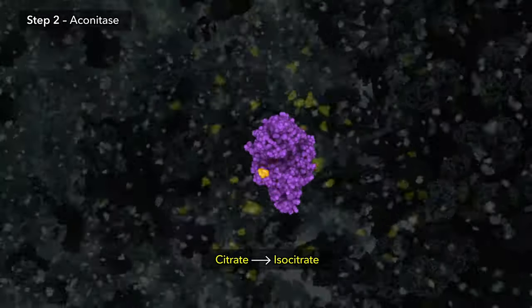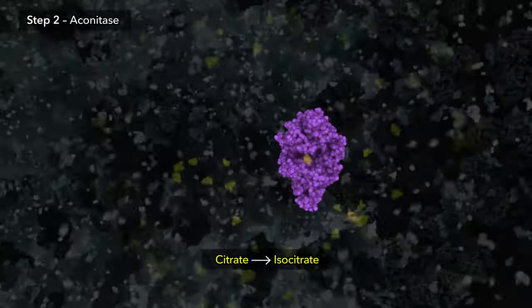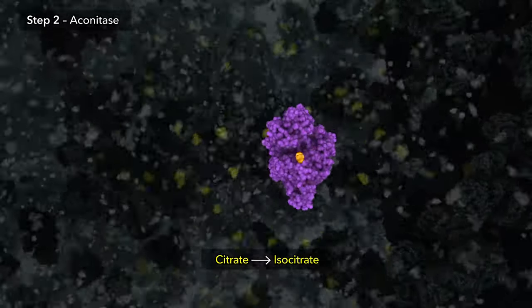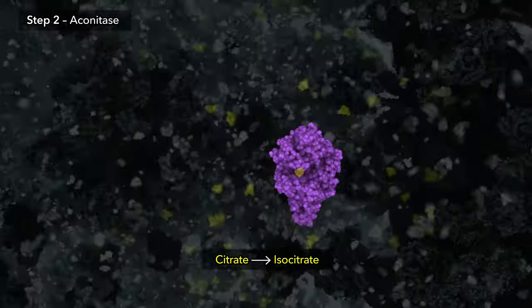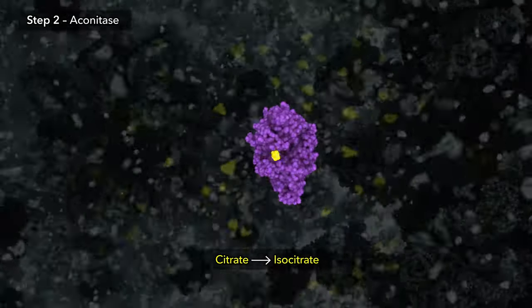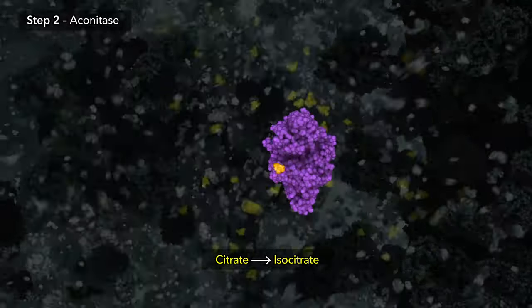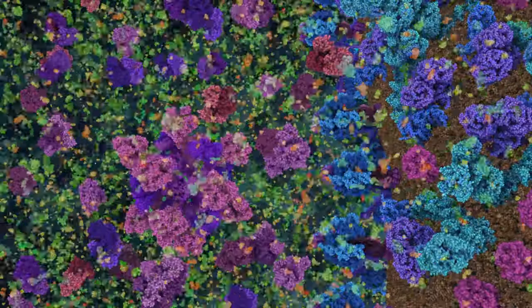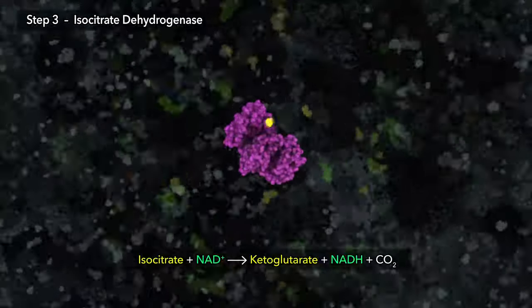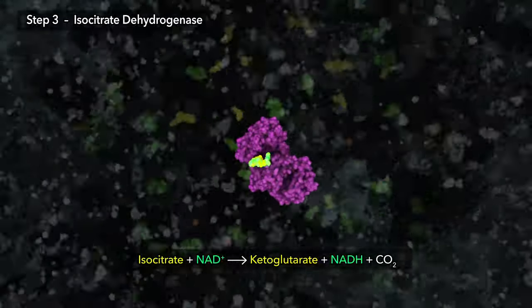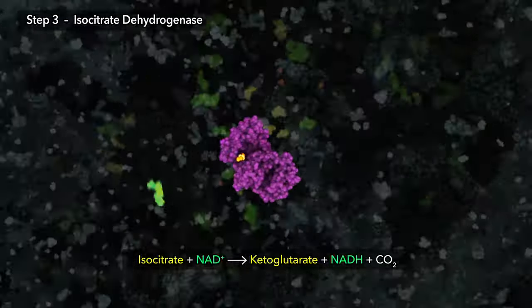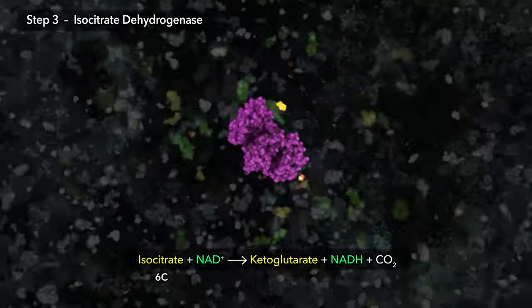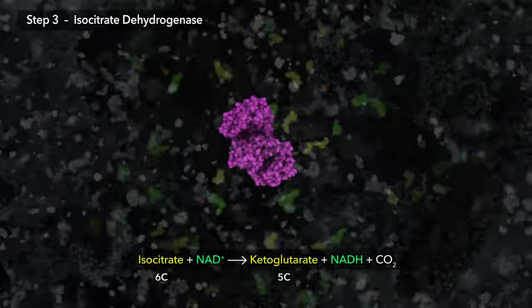The enzyme reaction of step two makes a small change to the citric acid molecule, moving the position of an oxygen atom, converting citrate into isocitrate. Step three of the cycle removes a carbon atom forming carbon dioxide as waste, while converting six-carbon isocitrate to five-carbon ketoglutarate.